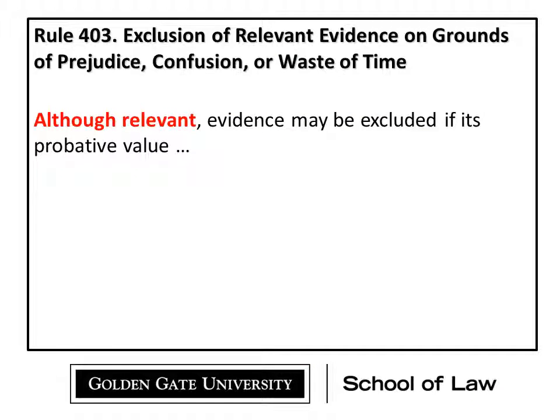Here's what the rule says — and notice it starts with 'although relevant.' The reason for that is simple: it's already cleared that first hurdle. It's cleared that very liberal evidentiary hurdle we know about. As we learned in Rule 401, evidence has some tendency to make a fact of consequence more or less probable than it would be without that evidence. It's a very low threshold — any tendency at all. So we expect a lot of evidence to overcome the relevance hurdle. It's a liberal standard and a very low hurdle.